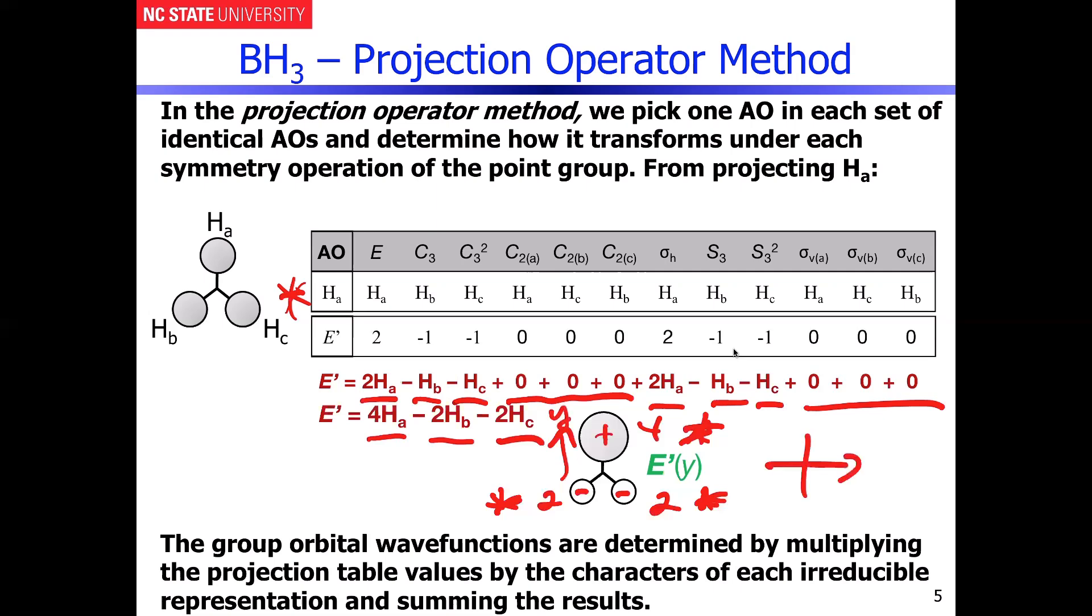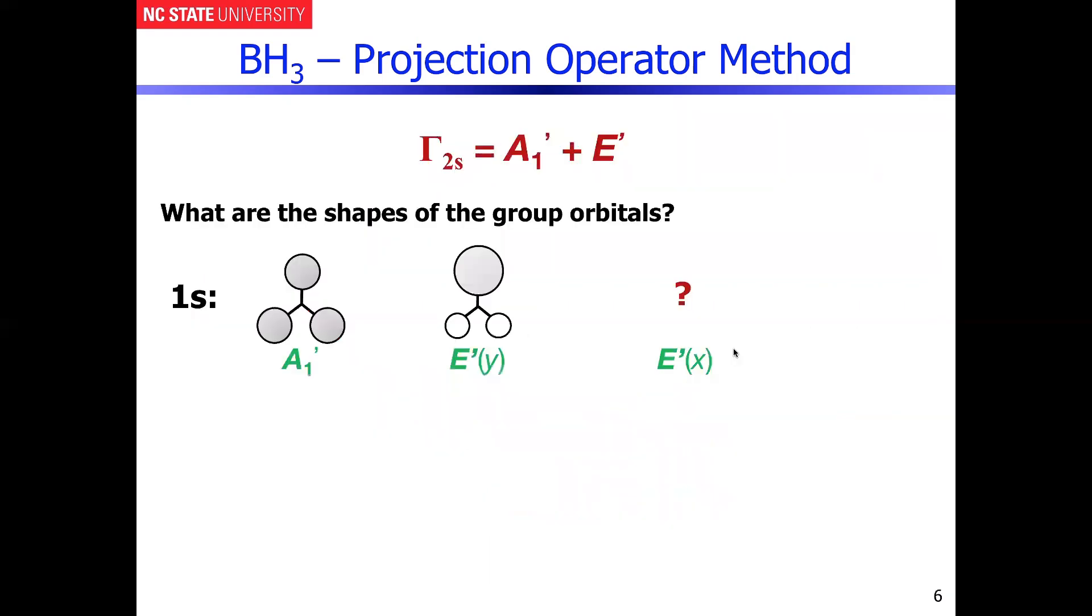I say that because it has the symmetry of the Y axis, where if you have X and Y, when you point through the origin here, Y is positive, and then below the origin Y is negative, exactly the phasing that you see in that particular group orbital.